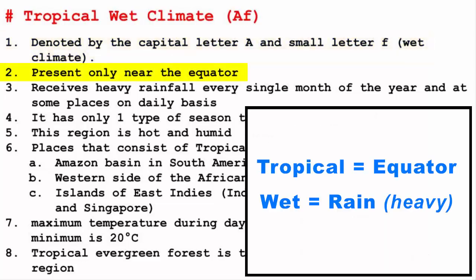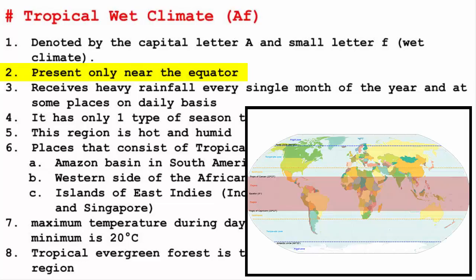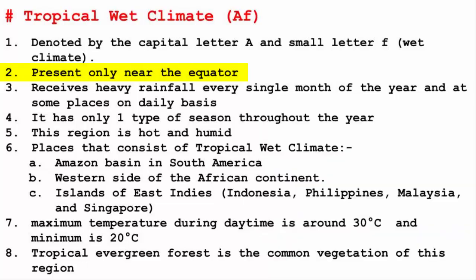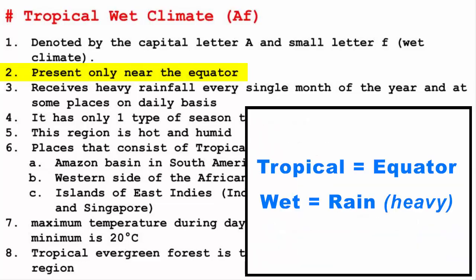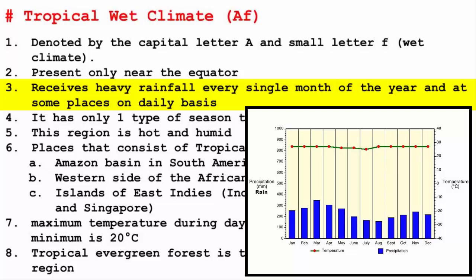By the name tropical, it's easy to figure out that this kind of climate is present only near the equator. The interesting part is the wetness associated with the tropical climate. In order to make a place wet, you need rain. That means we need to look for tropical places that receive a good amount of rainfall, and it has to rain every single month of the year — sometimes every single day as well. That is how the region will be wet throughout the year.